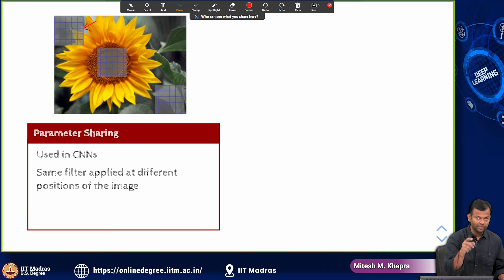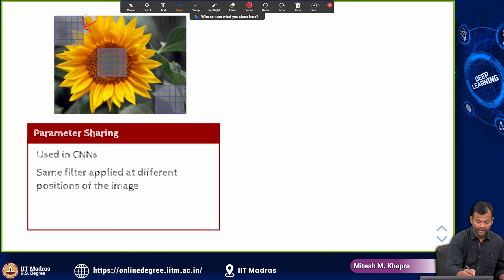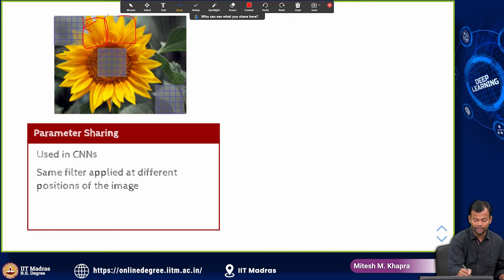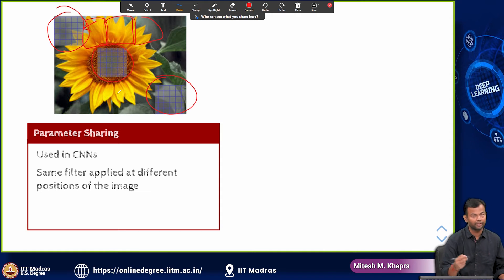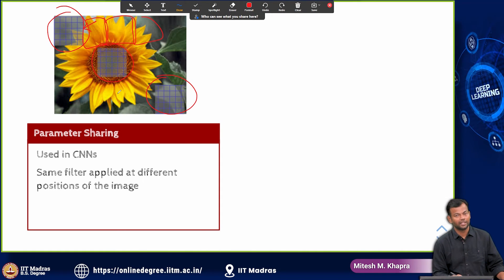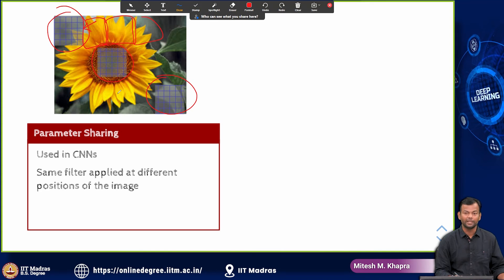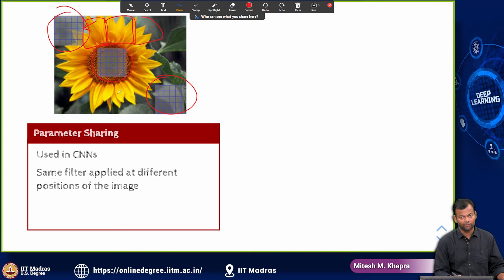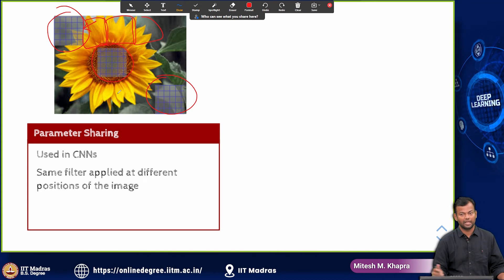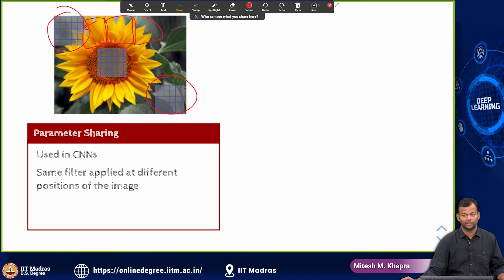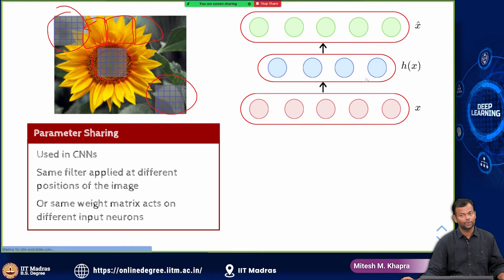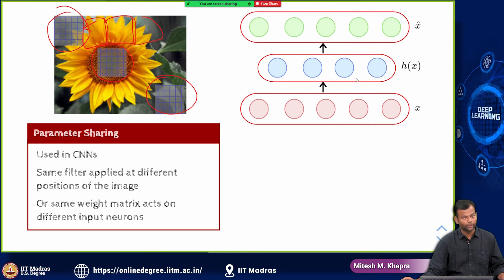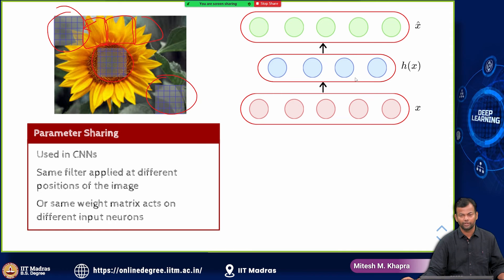I have a matrix, you can think of there is a matrix of weights. Now, instead of defining a separate matrix for every part of the image, I am going to use the same matrix and apply it to different parts of the image. So that is the basic idea. I will not say anything more at this point because you need to understand what convolution is and so on and we will see this in more detail when we reach there.